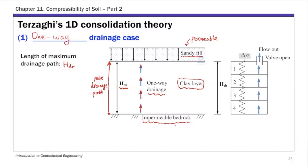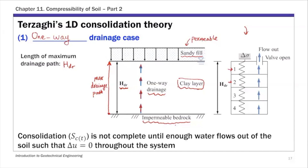Thinking of this consolidation process using the spring-cylinder model, if we subdivide the clay layer into four sections, water from layer 1 has to drain before anything from layer 2 can drain. Some of the water from layer 2 has to drain first before layer 3 can drain. This consolidation settlement is not complete until enough water flows out such that the excess pore pressure delta u is zero throughout the system.